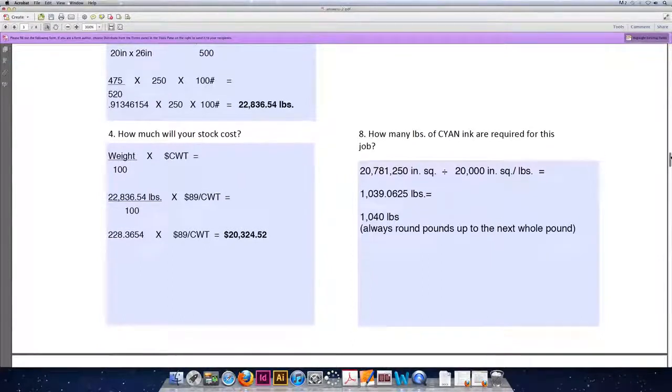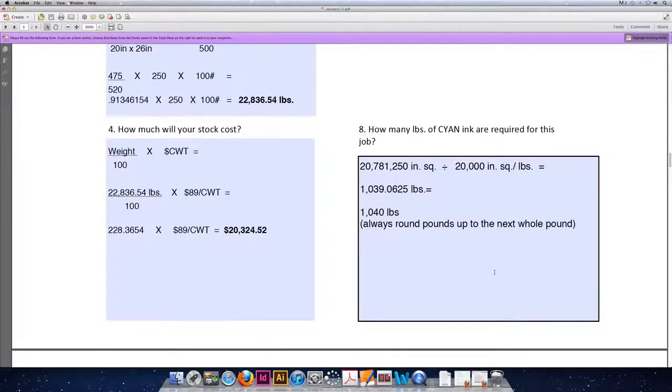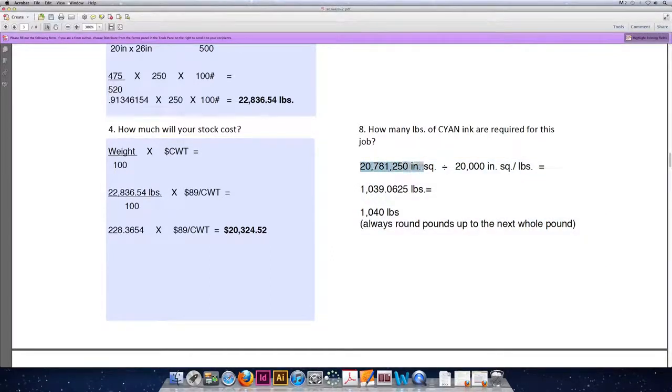Question eight. Now that we know the total number of square inches needed, how do we figure out how many pounds of ink to buy? We take the total number of square inches and divide it by the total number of square inches that one pound of ink can cover, and that's given to us in the problem as 20,000 square inches.